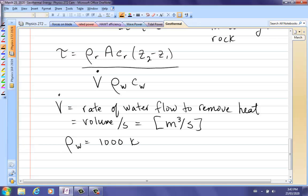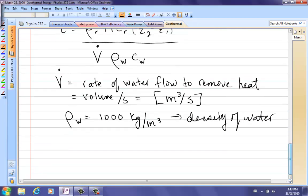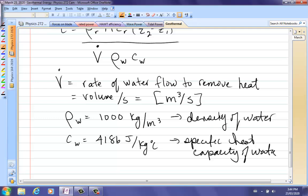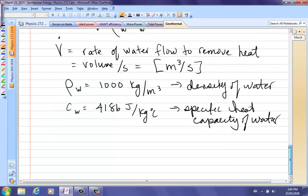That's density of water because that's what they use to pump down. This water does tend to get full of an awful lot of nasty minerals down there. But c_w is the 4186, specific heat capacity of water, joule per kilogram degree C. And that's specific heat capacity of water.